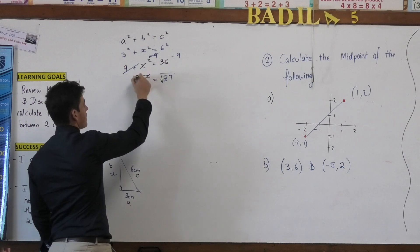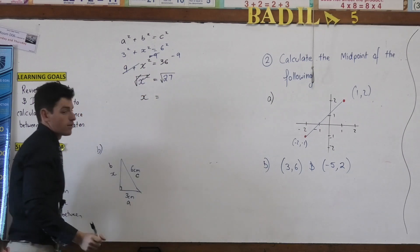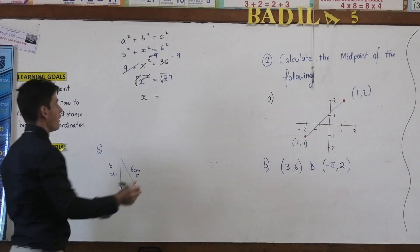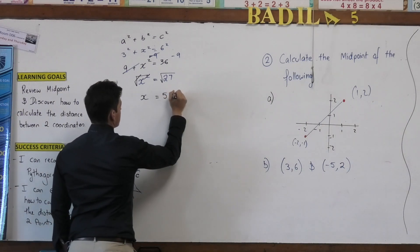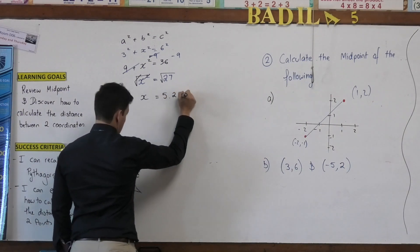They disappear, they cancel out and I'm left with x equals the square root of 27 which is about 5 point 2 centimeters.